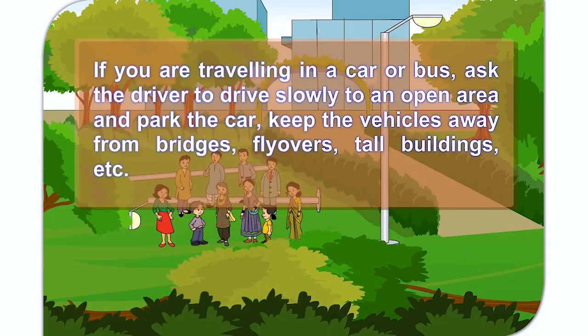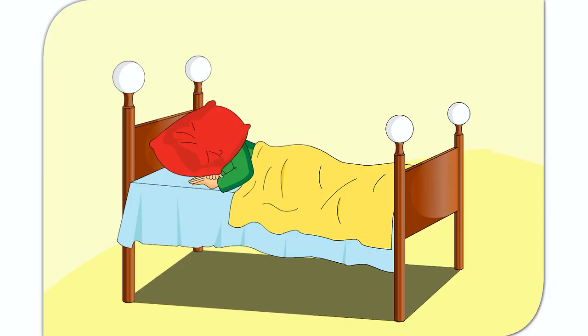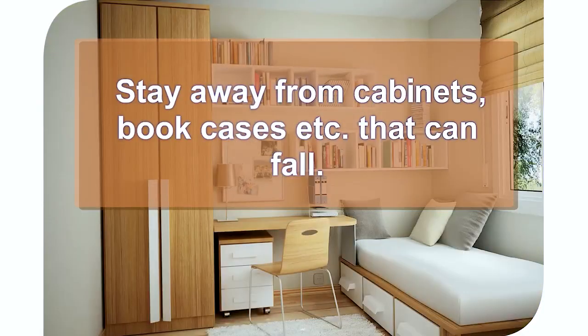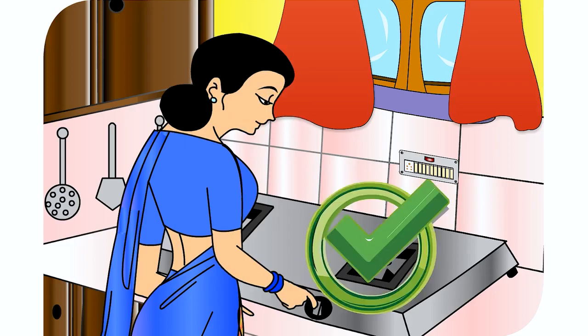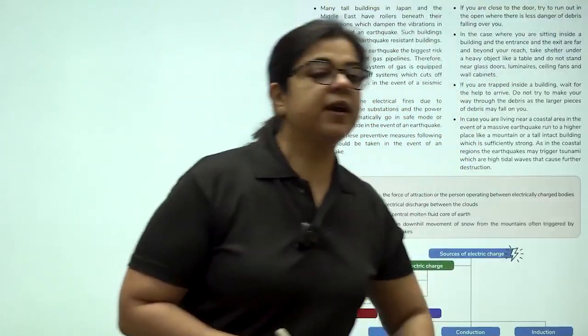If you are outdoors when an earthquake occurs, move to an open area like a park. If you are traveling in a car or bus, ask the driver to drive slowly to an open area and park the car. Keep the vehicles away from bridges, flyovers, tall buildings, etc. If you are inside when an earthquake occurs, take shelter under a table till the shaking stops. If you are in bed, put a pillow over your head to protect it. Stay away from cabinets, bookcases, etc. that can fall. Turn off the gas and power supply.